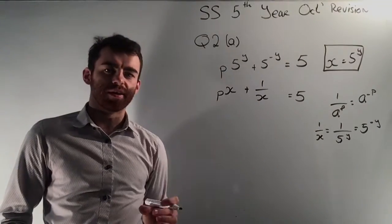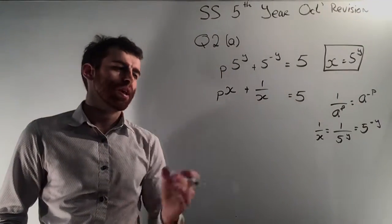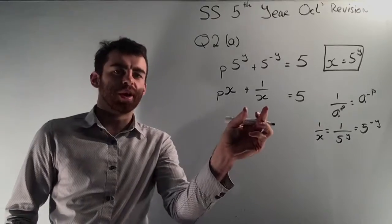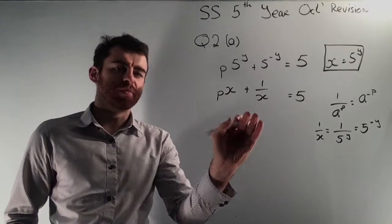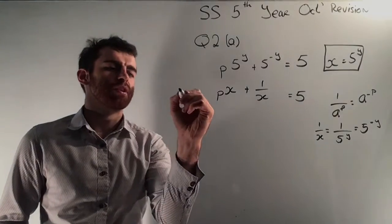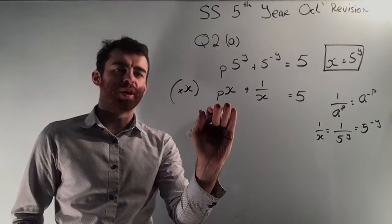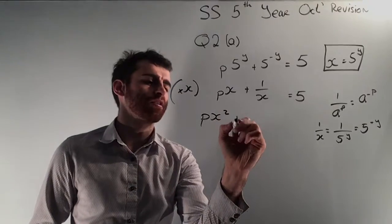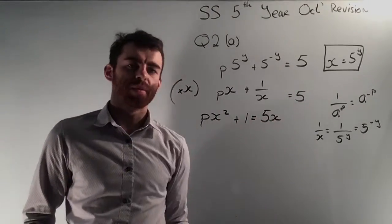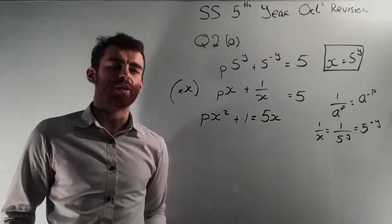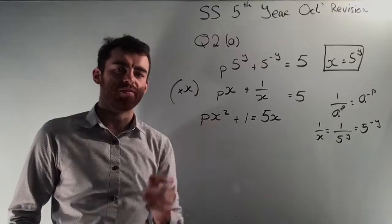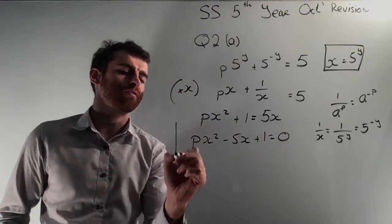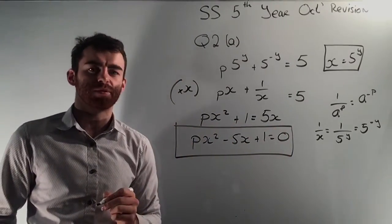Looking back at the original line, the middle term becomes 1 over x, so I can rewrite this as px plus 1 over x equals 5. The complication now is the fraction. To get rid of it, I need to multiply by x — but I can't multiply just one term, I have to multiply everything by x. Multiplying px by x gives px squared. Multiplying 1 over x by x gives 1. Multiplying 5 by x gives 5x. Now I'm very close to the quadratic. Bringing 5x across gives minus 5x, so the final answer for that part is px squared minus 5x plus 1 equals 0.